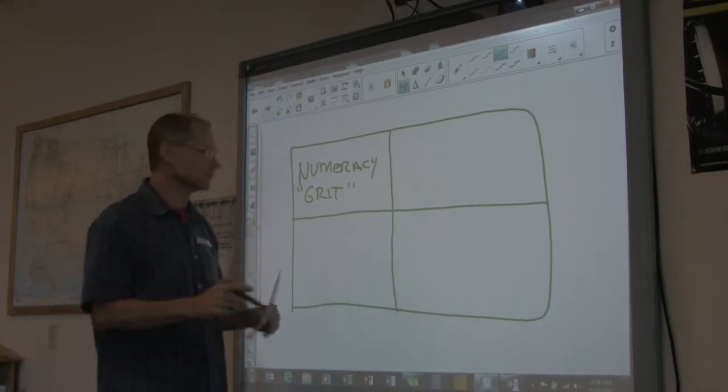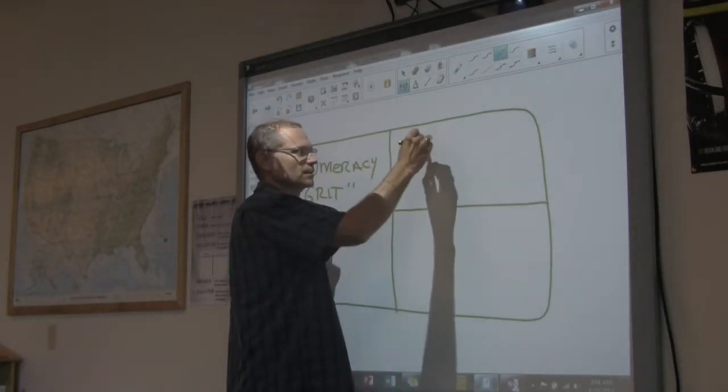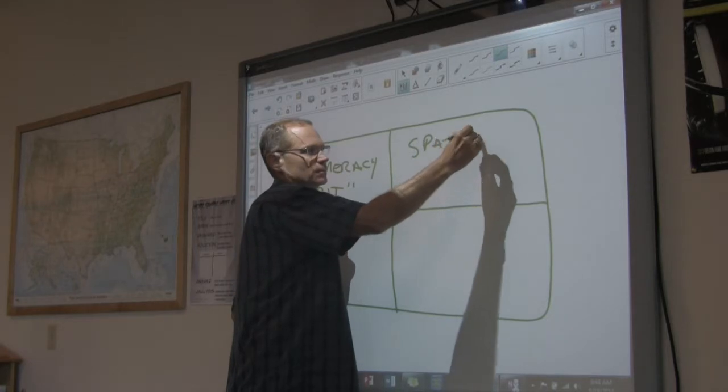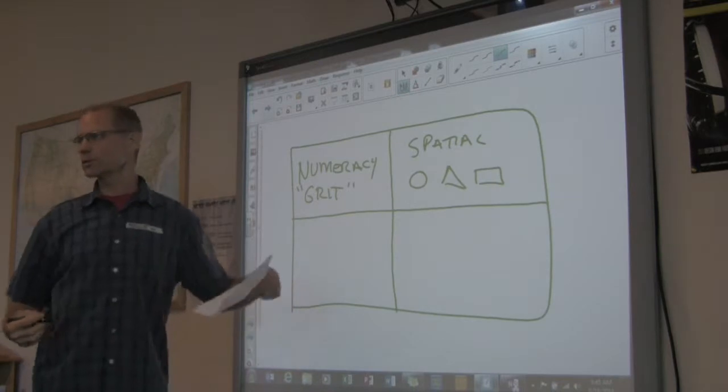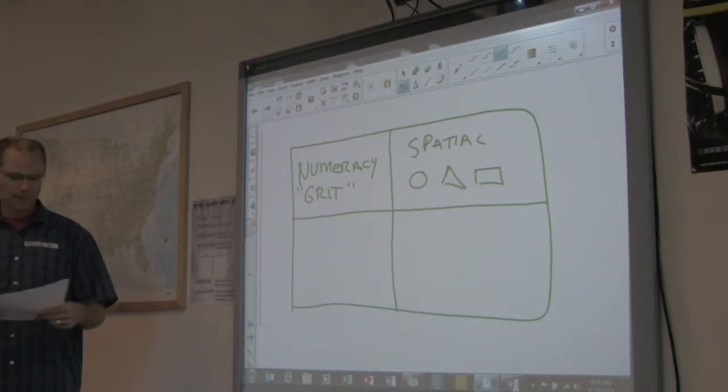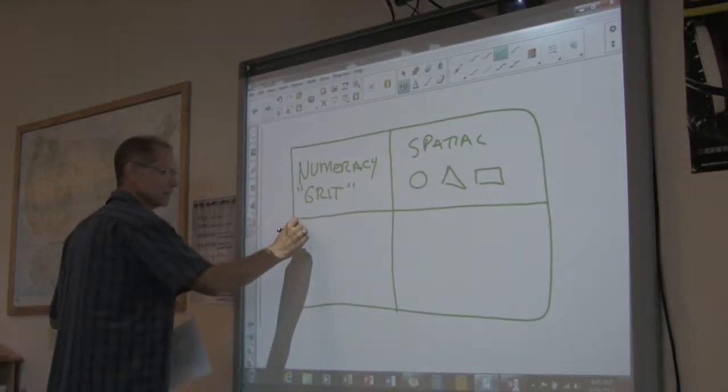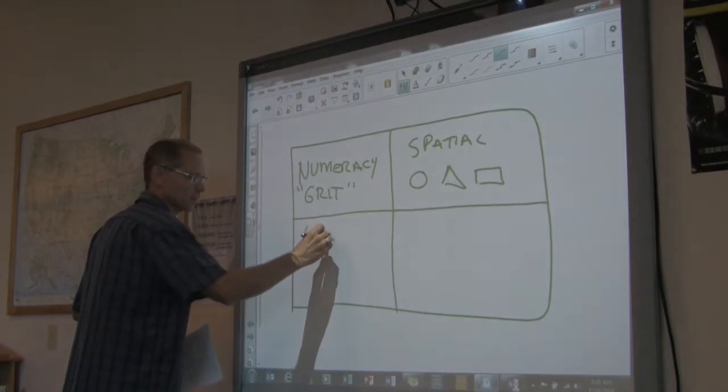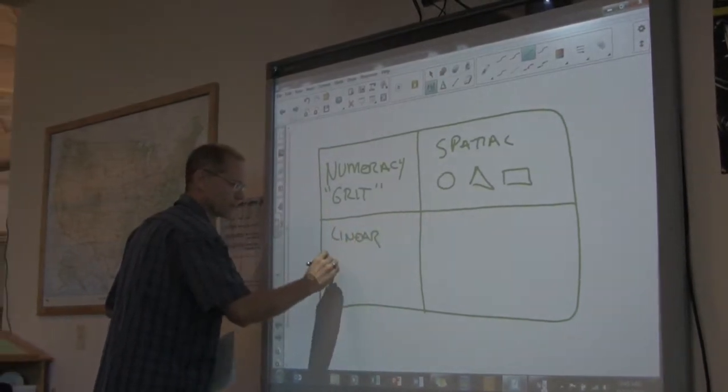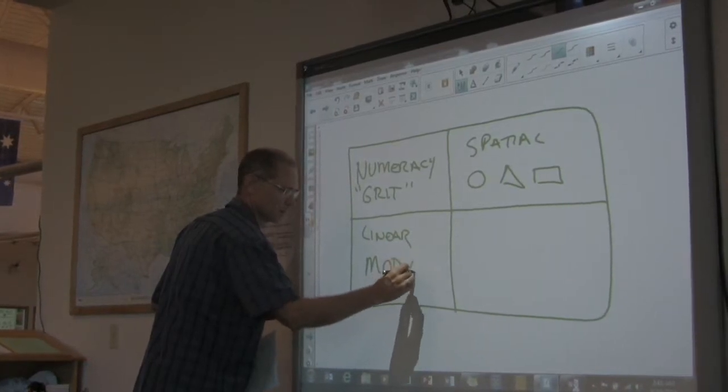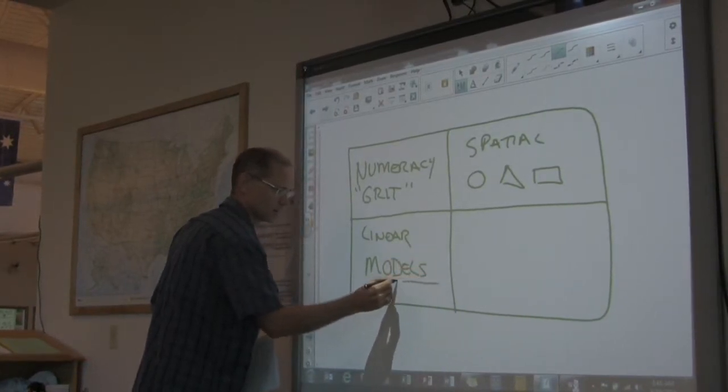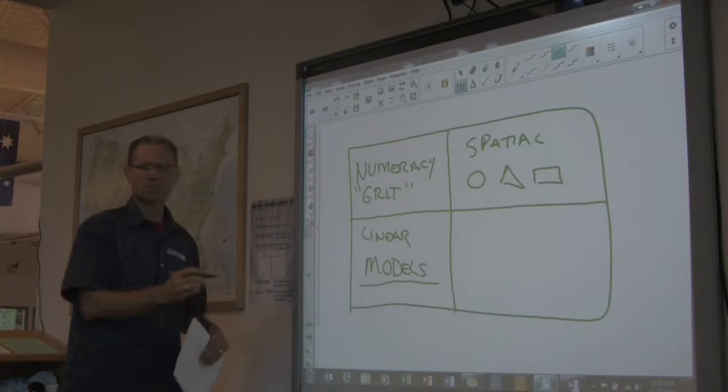The other one is spatial relationships. Can you work with circles, triangles, rectangles? This is kind of geometry. The other big one is linear, and here's the big word - models.